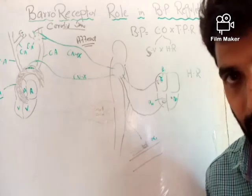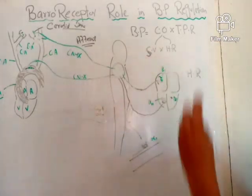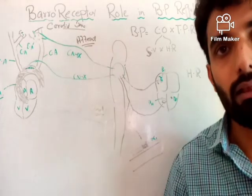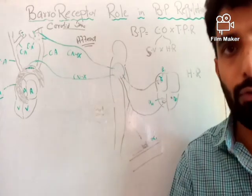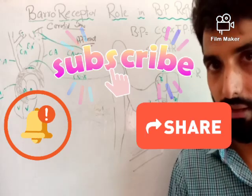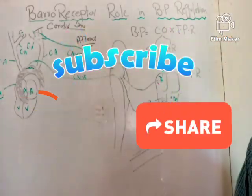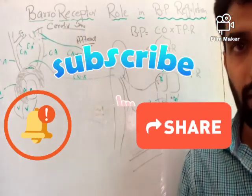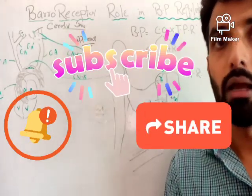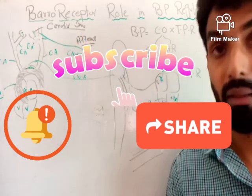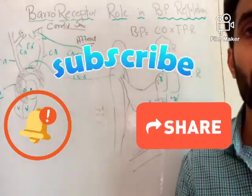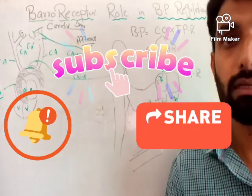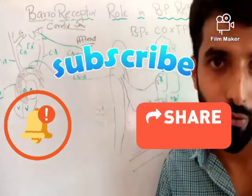In this way, the decreased blood pressure is compensated. Details of stroke volume, heart rate, cardiac output, diastolic volume, and systolic volume have also been explained in previous videos — you can visit those lectures as well. I hope you liked the lecture on how baroreceptors are responsible for the regulation of blood pressure in our body. Please subscribe to the channel, press the bell icon for future notifications, and like and share this video. Thank you so much.